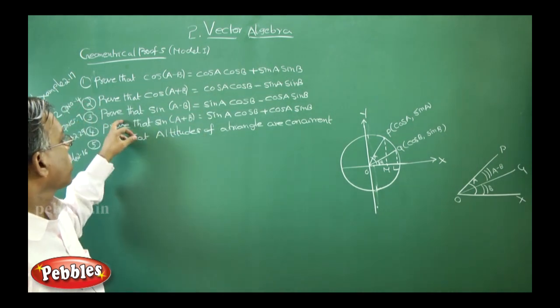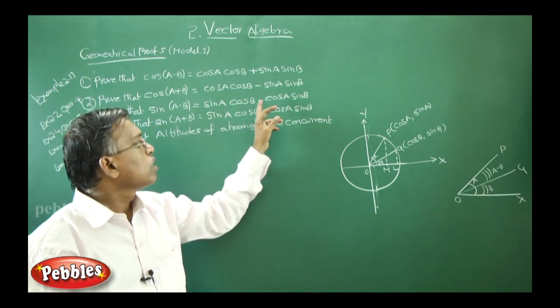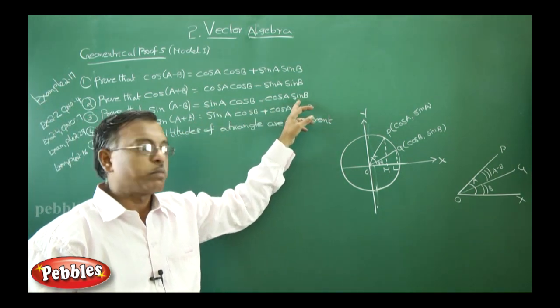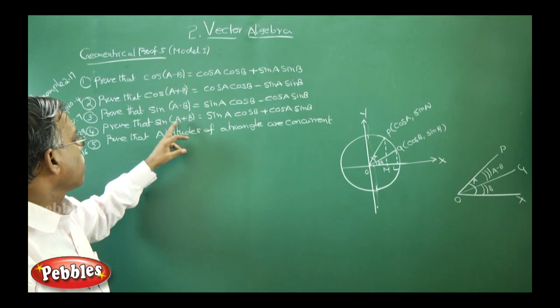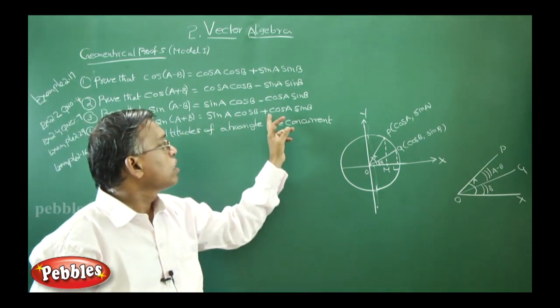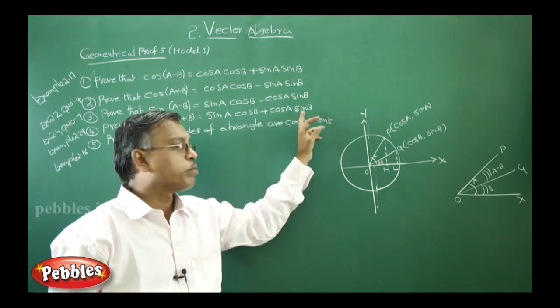Similarly, prove that sin of A minus B is equal to sin A cos B minus cos A sin B. Next, prove that sin of A plus B is equal to sin A cos B plus cos A sin B.